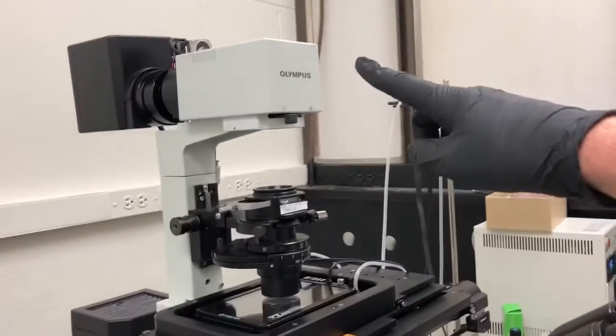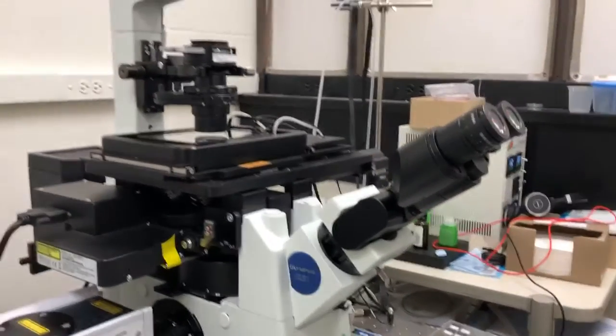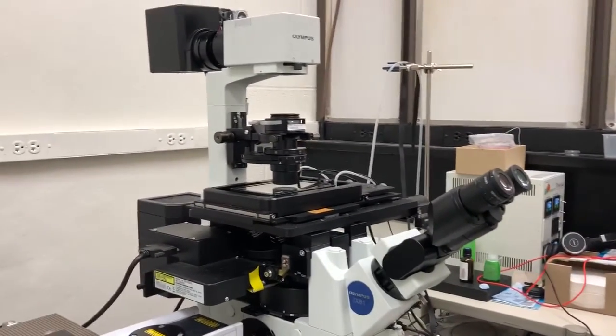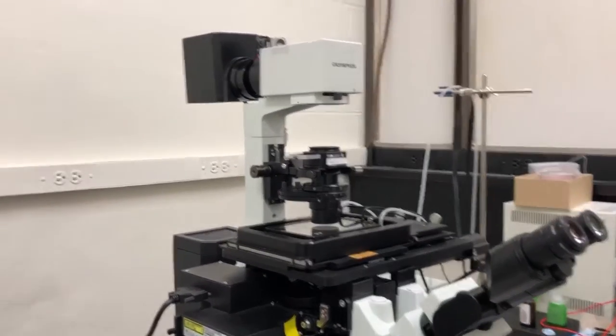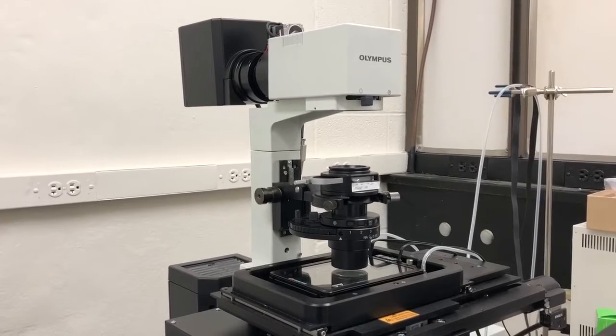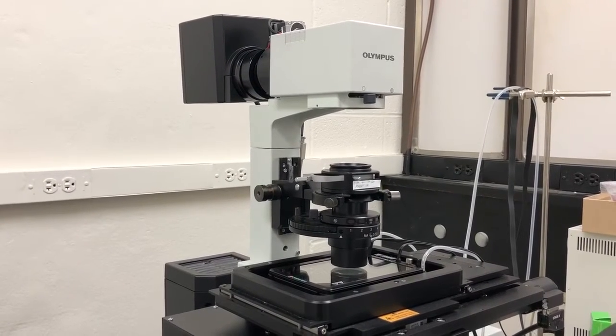So what we need is for this light to be on and for all of the components in the path to the eyepiece to be set to direct the light to the eyepiece and to not be blocked. So let's do this one step at a time. First, to illuminate the sample, this is not something that we can do on the microscope itself, it's something that we have to do in the software.